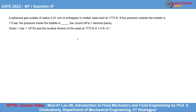GATE 2022 metallurgical engineering question 47: a spherical gas bubble of radius 0.01 mm is entrapped in a molten steel held at 1773 Kelvin. If the pressure outside the bubble is 1.5 bar, find the pressure inside the bubble. Given: 1 bar = 10^5 pascals, and the surface tension of steel at 1773 Kelvin is 1.5 newton per meter.